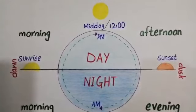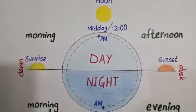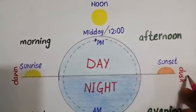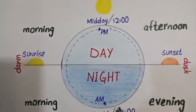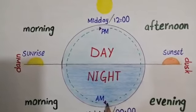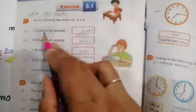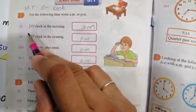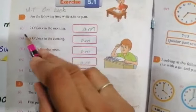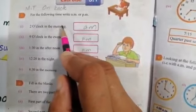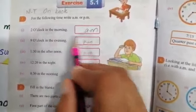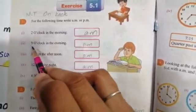We call this 24 hours. Now look at your book page 107: for the following times, write AM or PM. Two o'clock in the morning - morning time, two o'clock means when your new day starts. Two o'clock in the morning - you will write AM. And if the night is two o'clock, then also AM. Nine o'clock in the evening - that's PM.